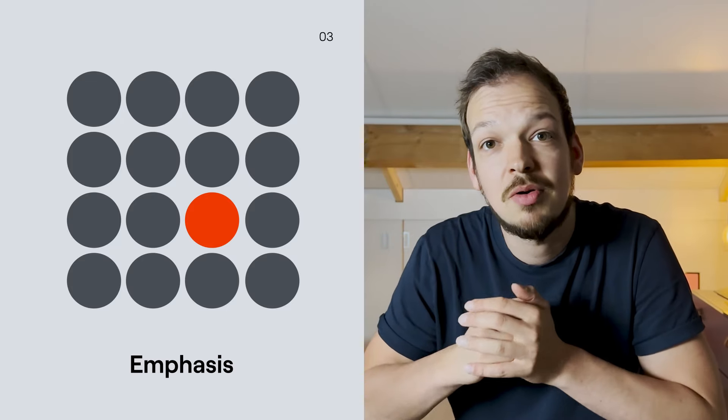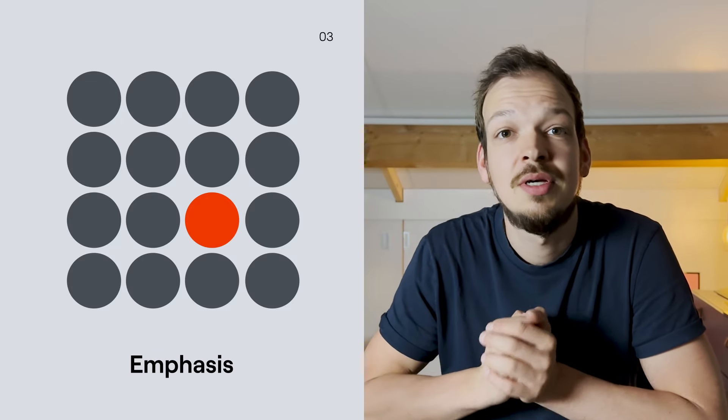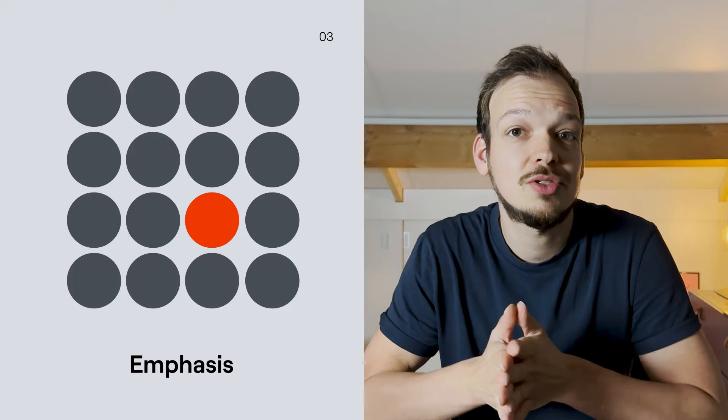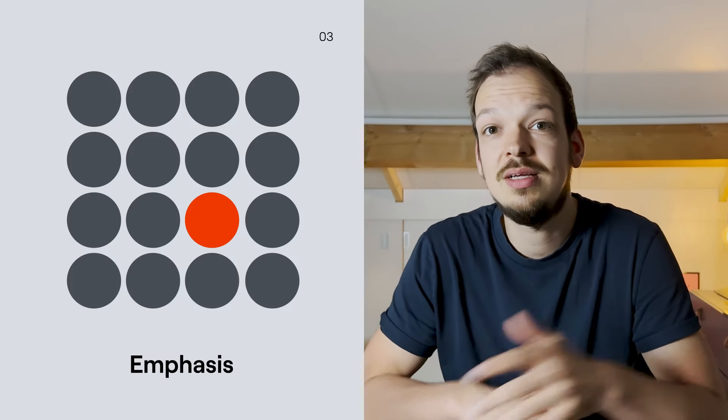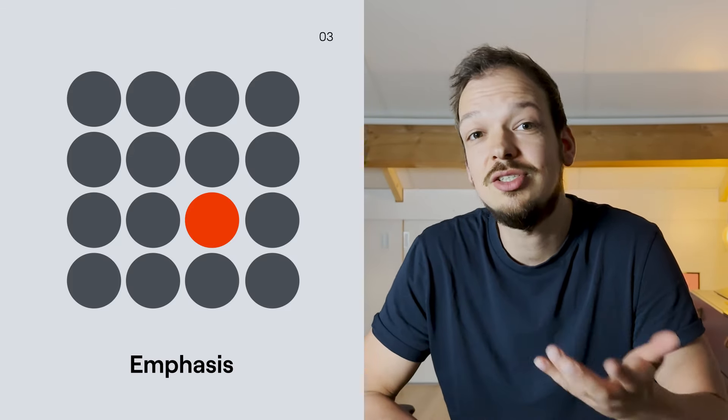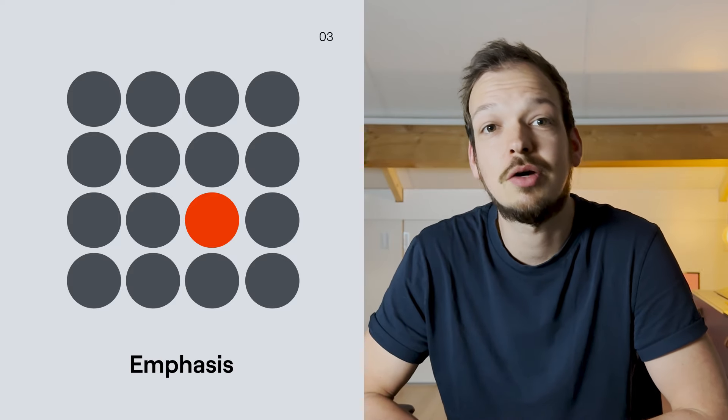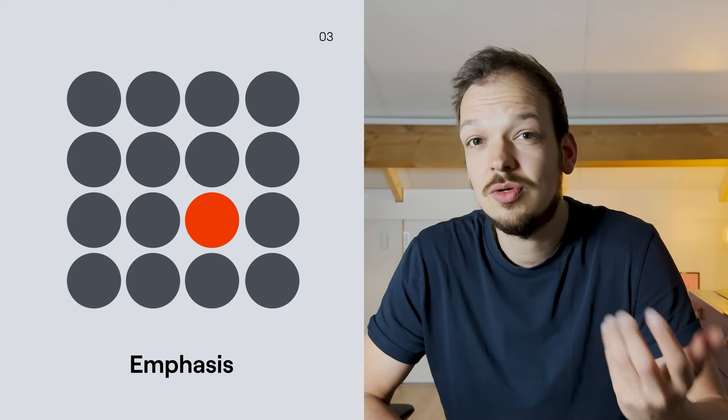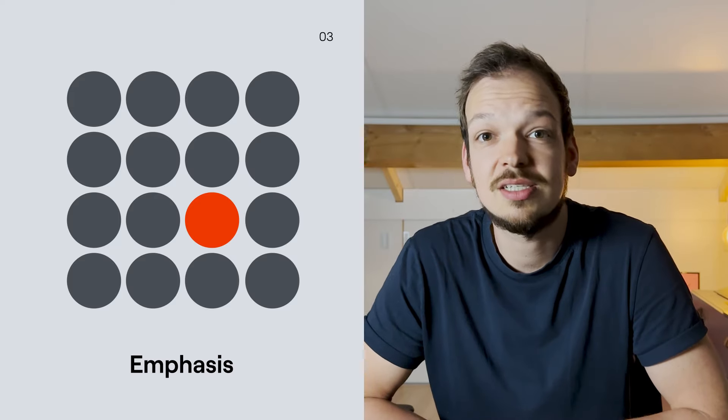Emphasis. In design, emphasis directs attention to specific elements, highlighting their importance. This strategic emphasis guides the viewer's gaze, communicates hierarchy, and effectively conveys key messages. In this iconic image, despite the presence of multiple circles, it's the vibrant orange circle that immediately draws your eye. This intentional use of color creates a focal point, making the orange circle stand out and emphasizing its significance.